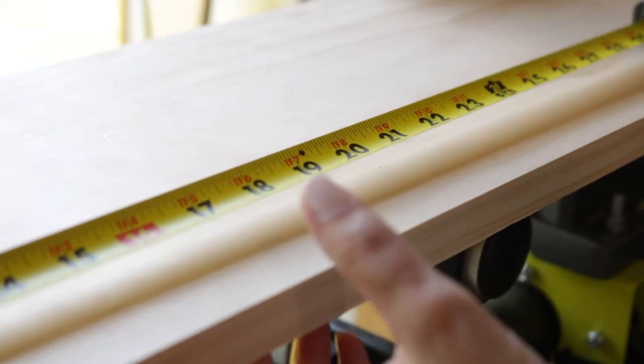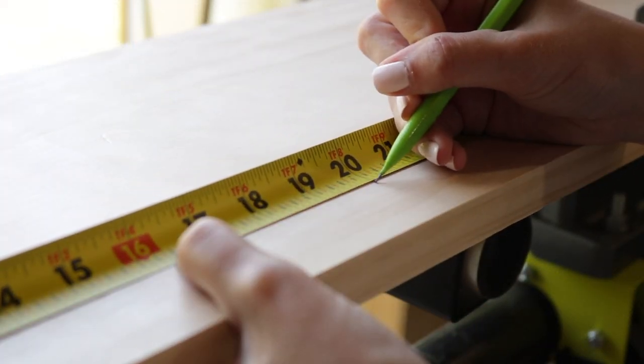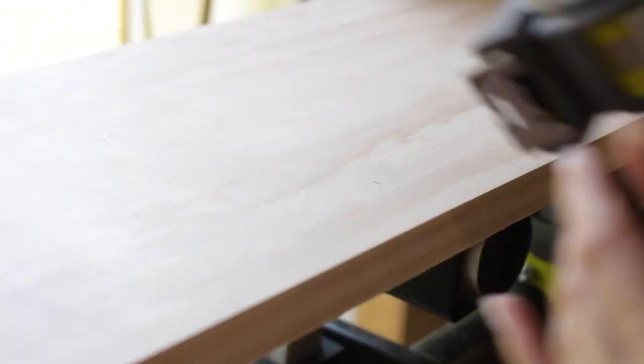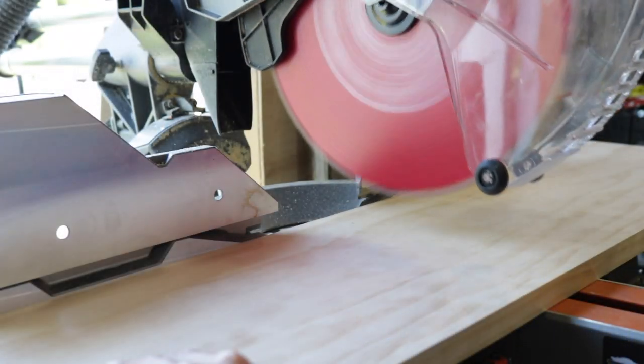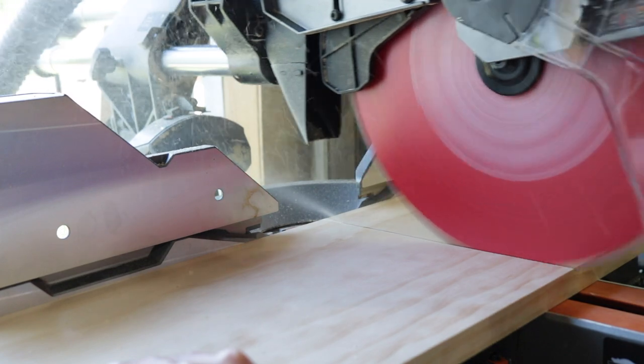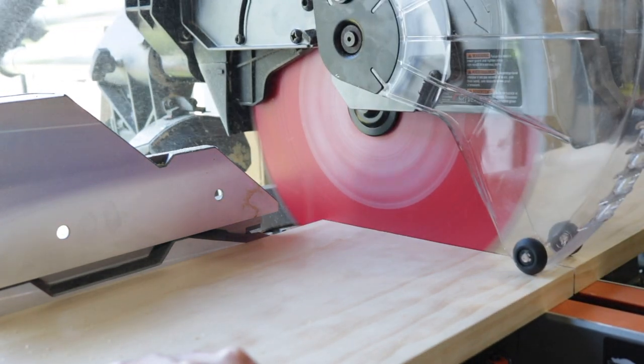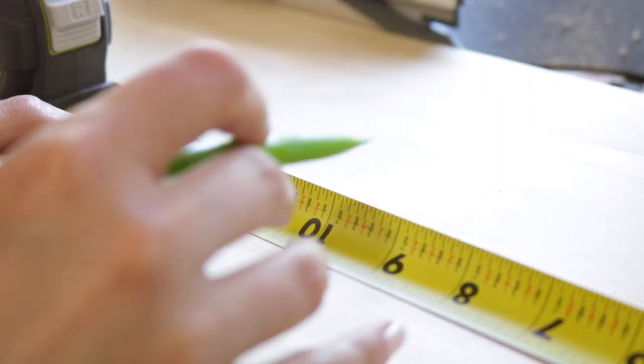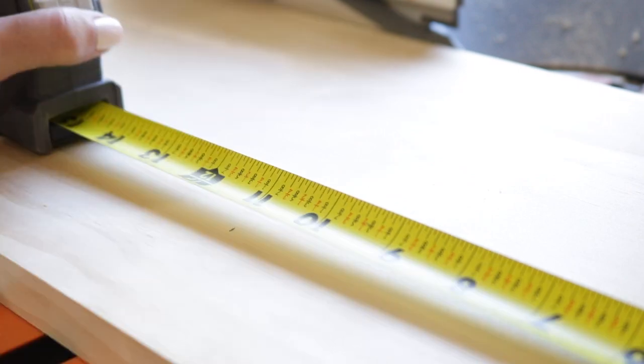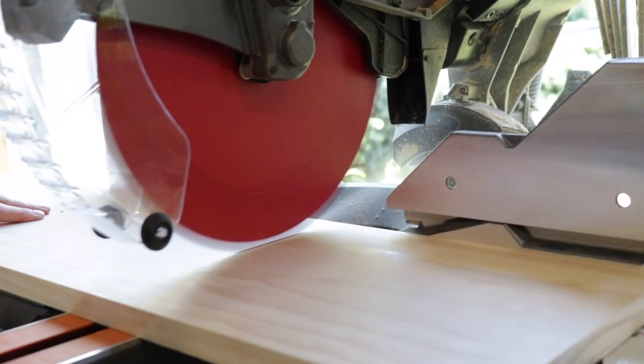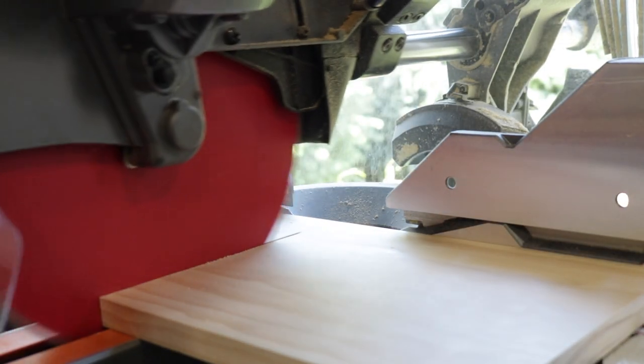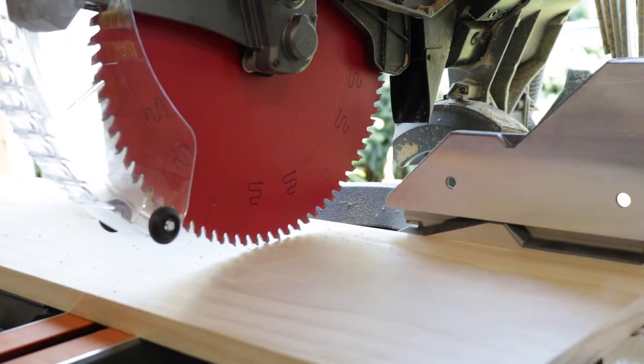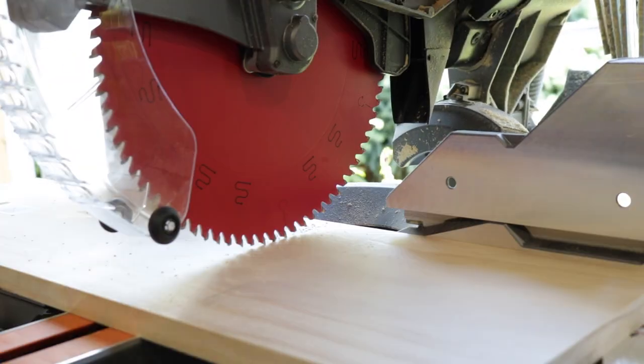The first step in this project is to measure and cut all of the pieces needed for the bike rack. For this bike rack you will need a large backer board, three evenly cut shelves, one front piece for the cubby, one spacer board, and a small scrap piece that will prevent the bike from falling off the rack. All of these measurements can be found in the free plans on RYOBI Nation.